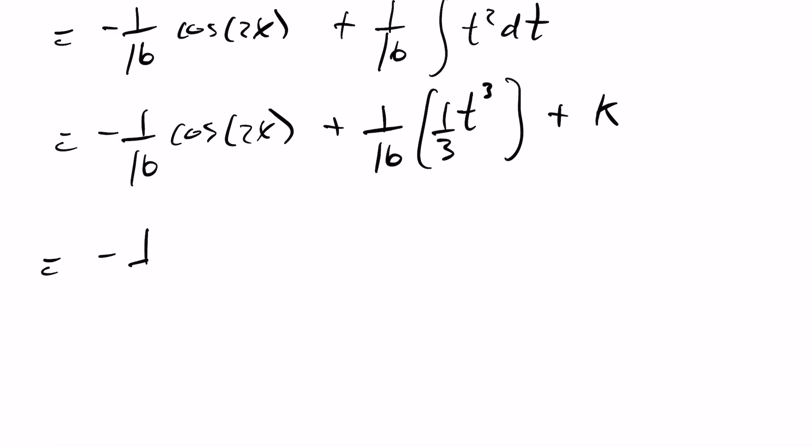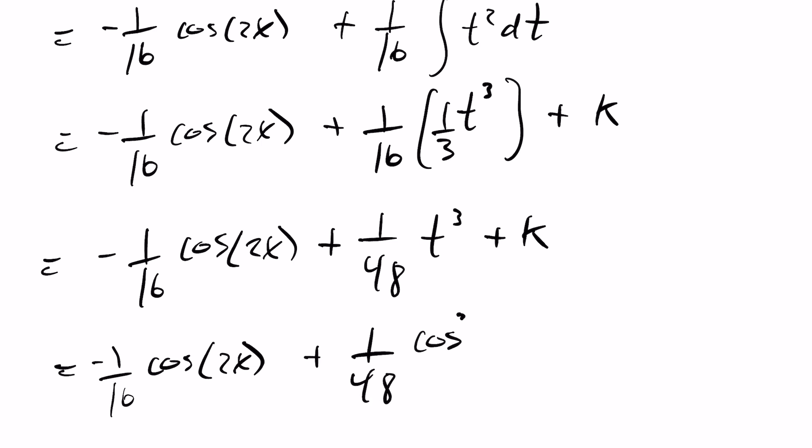And finishing this off we get 1 over 16 cos of 2x plus that'll be 30 and 18 so that'll be plus 1 over 48 t cubed plus k. You can go ahead and substitute what t is. If you recall we let t equal cos of 2x so this would be cos cubed of 2x plus some constant value of k.